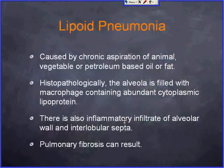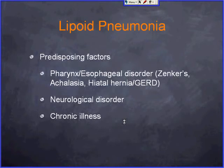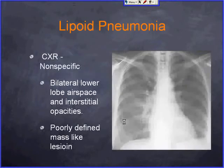In the inhalational category, lipoid pneumonia is caused by chronic aspiration of animal, vegetable, or mineral oil fat. Physiopathologically, the alveoli are filled with macrophages containing abundant cytoplasmic lipoprotein, with infiltration of alveolar walls and interlobular septa — again caused by infiltration, whether edema, tumor cells, or inflammatory cells. Primary fibrosis can result if untreated. Predisposing factors include esophageal, pharyngeal, or neurological disorders predisposing to aspiration. Chest X-ray shows bilateral lower lobe airspace and interstitial changes, with poorly defined mass-like lesions occasionally.